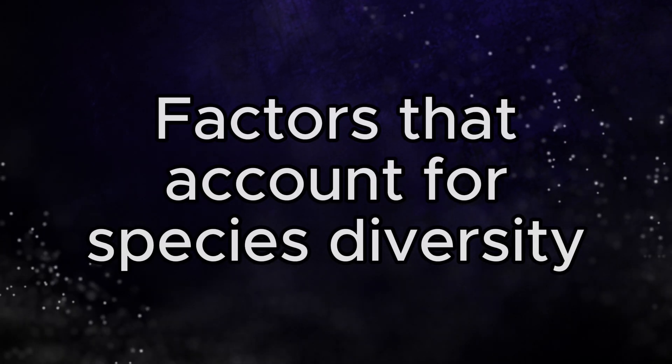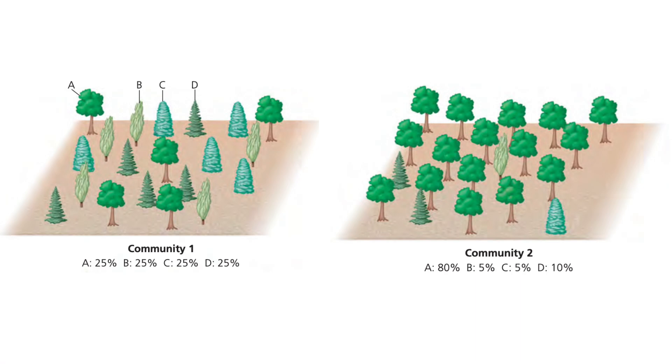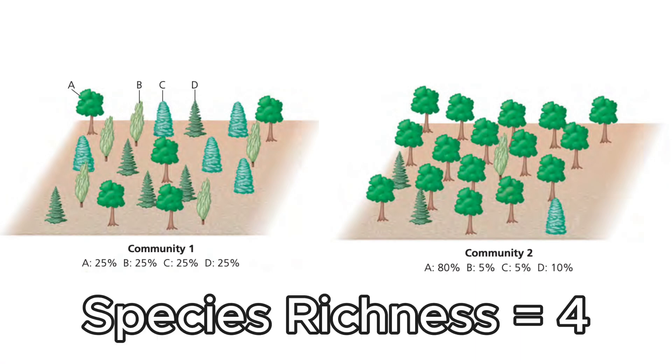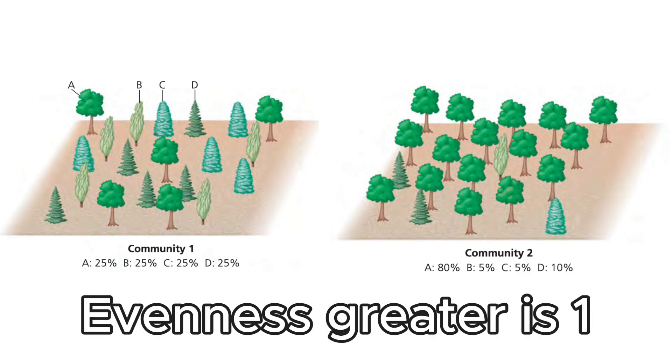It also turns out that diverse communities, due to their complexities, can be harder to invade for invasive species. While many mistake species diversity as simply the number of species in a community, it's actually a little bit more complex than that. This image shows that the number of species in both systems is identical — this is what we call species richness. However, the species evenness is quite different, with a more even relative abundance in the left system versus the right. Both species richness and evenness must be taken into account when assessing the species diversity of a community.